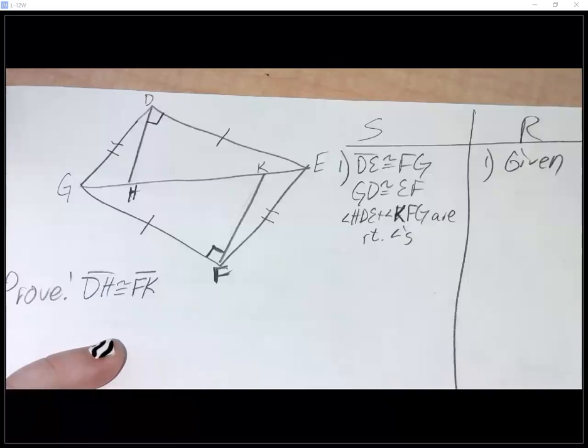Anybody have any thoughts? I marked everything. Just say things that you know, even if we don't end up using it. If you have extra steps in your proof and you don't end up using them, that's fine as long as they're not incorrect. Anybody see anything we could do? Any triangles you could get congruent?